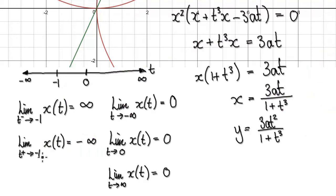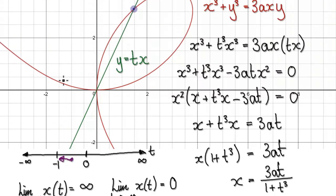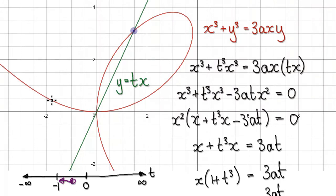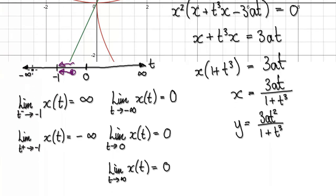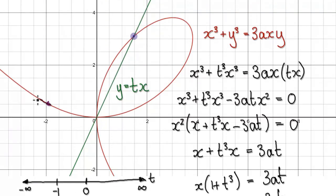The point is that as t heads towards negative 1 from the right, the x direction would head towards negative infinity. So if you're here and then you move towards negative 1, you would have been somewhere around here, and the x direction will move towards negative infinity — you're moving to the left all the time. That means you are heading in this direction, so you must be traveling along this path.